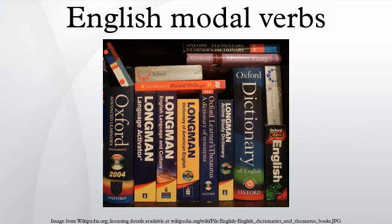Modals can appear in tag questions and other elliptical sentences without the governed verb being expressed: 'Can he?' 'I mustn't.' 'Would they?' Like other auxiliaries, modal verbs are negated by the addition of the word 'not' after them. The modal 'can' combines with 'not' to form the single word 'cannot'. Most of the modals have contracted negated forms in -n't which are commonly used in informal English: can't, mustn't, won't, etc.